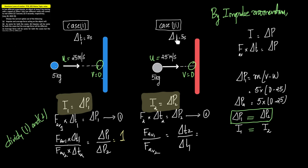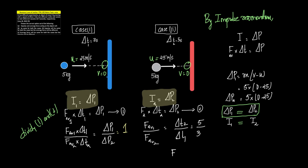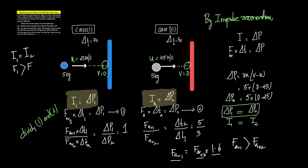Given that Δt2 is 5 seconds and Δt1 is 3 seconds, we get F_average1 / F_average2 = 5/3 ≈ 1.6. Therefore, the average force in the first case is 1.6 times the average force in the second case, meaning force average 1 is greater than force average 2. The conclusion is: impulse in both cases is equal, whereas the average force in the first case is greater than in the second case.